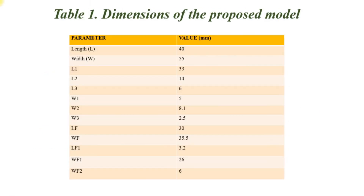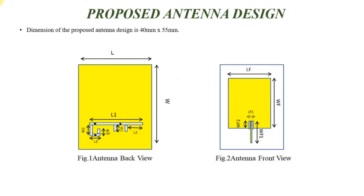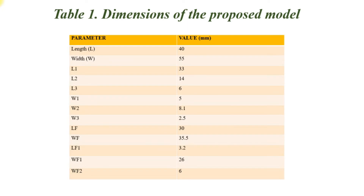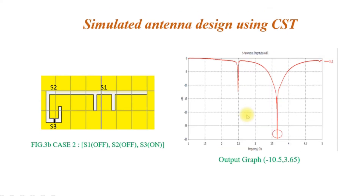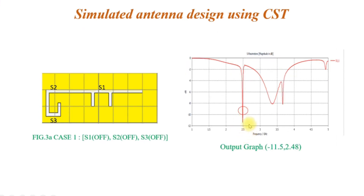These are the different dimensions used for the proposed design — all labels are marked on the antenna itself and the corresponding values are listed. For the initial simulation condition, S1, S2, S3 — considered as diode switches — are all in the off condition. With all three diodes off, the S11 graph shows a single resonant frequency at exactly 2.45 GHz, with a return loss depth of around minus 11.5 dB.